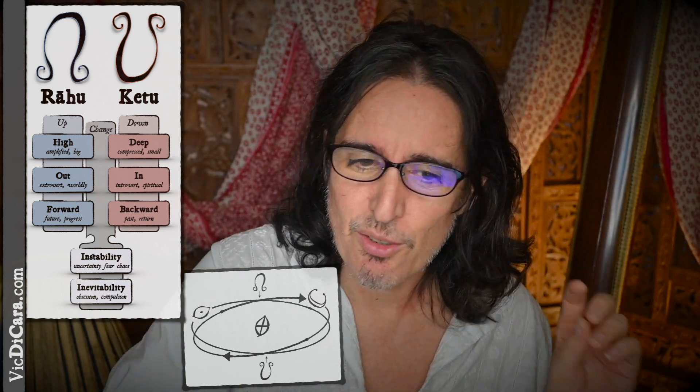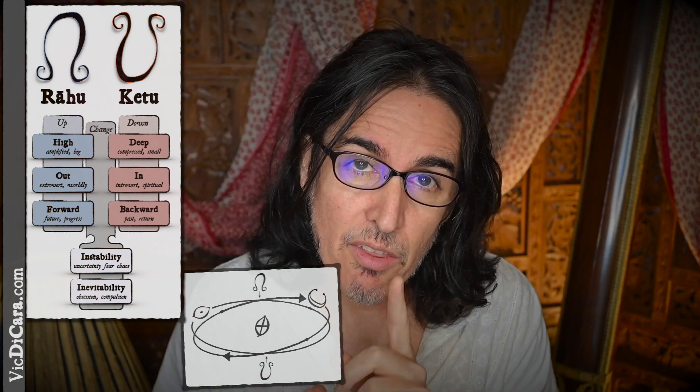That is everything you should know about Rahu and Ketu on one little page and one little diagram. Now let's think about Rahu and Ketu in Aries or Libra. That's the other special thing about Rahu and Ketu — if you look at the diagram of their orbits, you'll notice they are always 180 degrees apart from each other. If you have Rahu in Aries, you know that you have Ketu in Libra, or vice versa. There's nowhere else it could be. The nodes are in two signs at once — always in the opposite signs.